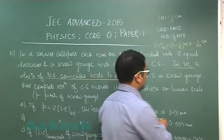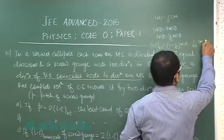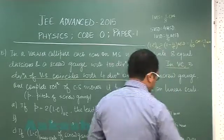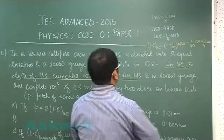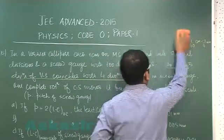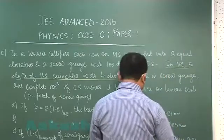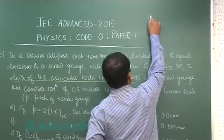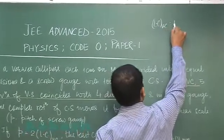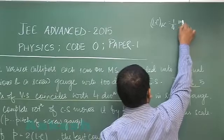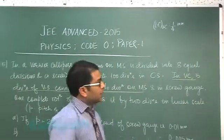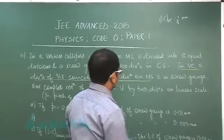So that would be 1 by 4 millimeter. I'll be requiring this data, so let me erase this part. I'm short of space in this particular question. So here the least count of vernier caliper has come out to be 1 by 4 millimeter. Now let us come to the circular scale.